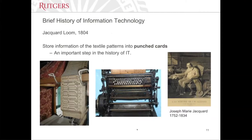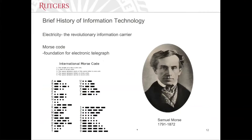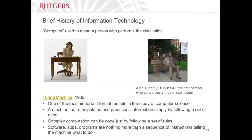The punch cards technology started in the 1800s. After that, we invented electricity, which was a revolutionary information carrier. Then Morse invented Morse code, which most of us know about, and this was the foundation for the electronic telegraph. Interestingly, at that time the word 'computer' literally meant a person who performs calculations — not a digital device. It was just a person.